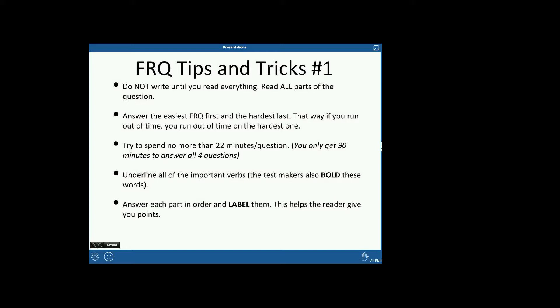Underline all the important verbs. The test makers are starting to make those in bold, but just in case, underline them, like identify versus describe. Identify would be like, agriculture. And then describe would be like how agriculture relates to whatever they're asking you about. If you just identify and they ask you to describe, you're not going to get any points.